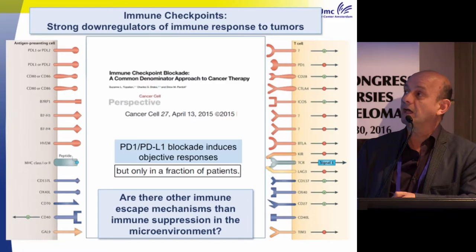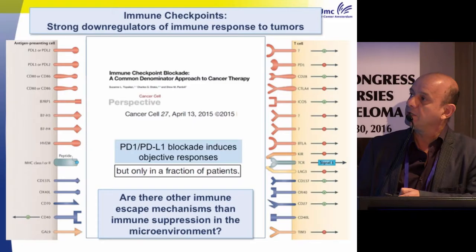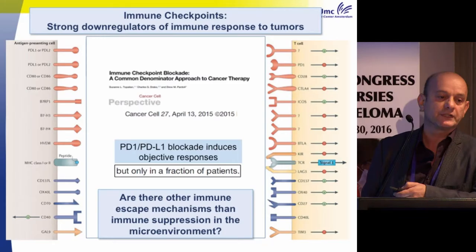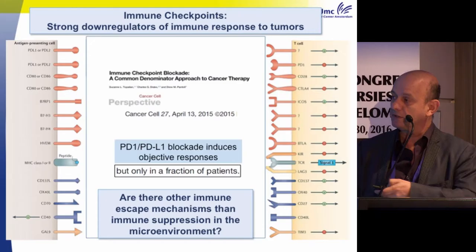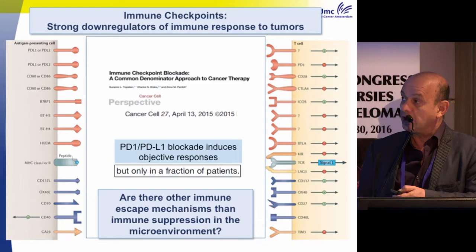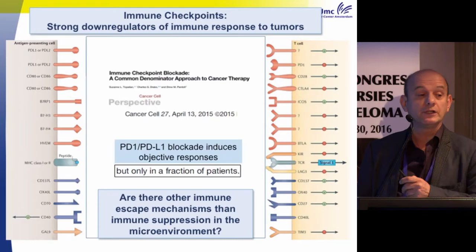Immune checkpoints in the microenvironment are strong down-regulators of immune responses to tumors. In myeloma patients, expression of immune checkpoints PD-1 and PD-L1 are highly upregulated in MRD-positive patients — work from our Spanish colleagues. This proves immune checkpoint upregulation in the microenvironment. Immune checkpoint blockade is now considered a common approach in cancer therapy: PD-1/PD-L1 blockade induces objective responses, but only in a fraction of patients.